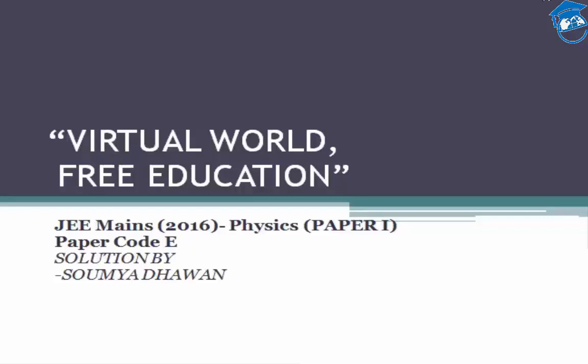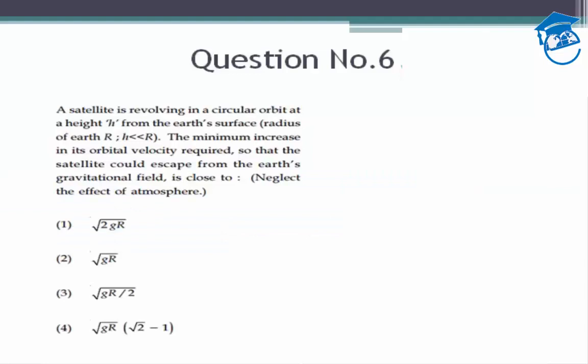Hello everyone and thanks for watching Edupedia World videos. In this video we'll discuss solutions to the 2016 JEE Mains physics question paper. Let's go to the next question. A satellite is revolving in a circular orbit at a height h from the earth's surface.